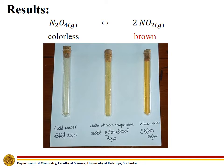The reaction shown here is exothermic in the backward reaction, which produces dinitrogen tetraoxide, and is endothermic in the forward reaction, which produces nitrogen dioxide. This is because dinitrogen tetraoxide is more stable than nitrogen dioxide, as the bonds in dinitrogen tetraoxide are stronger than the bonds in nitrogen dioxide.